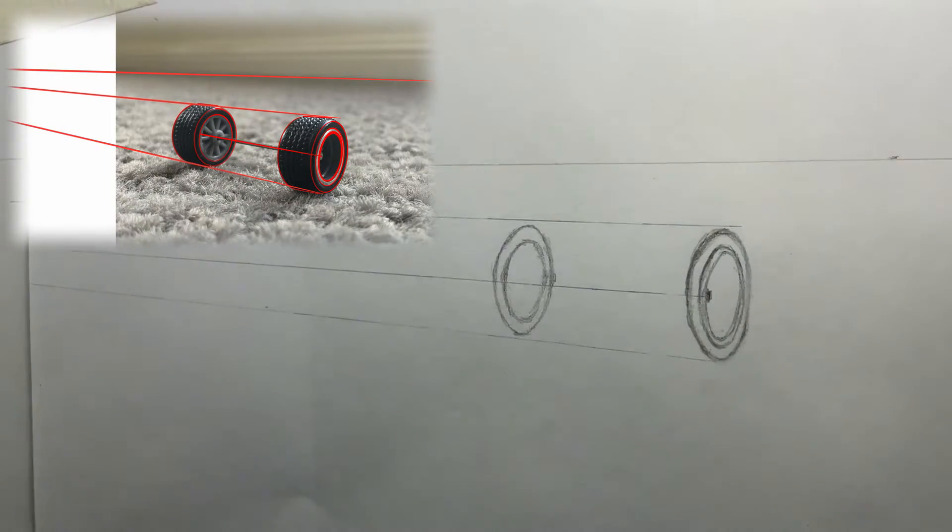To add to the thickness of the wheel, draw curved lines parallel to the outer ellipses. There will be one per wheel. Make the curved lines stop just before they reach the perspective lines.